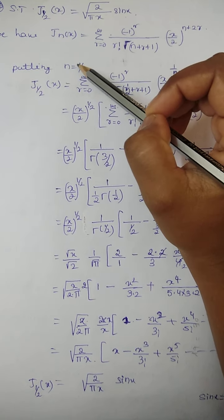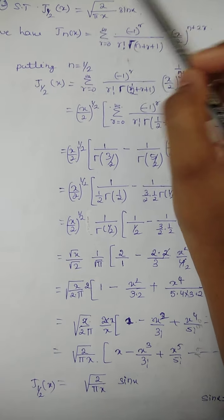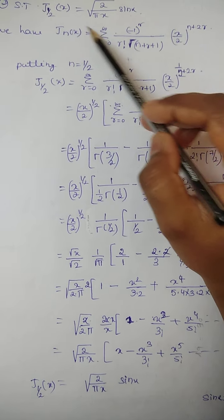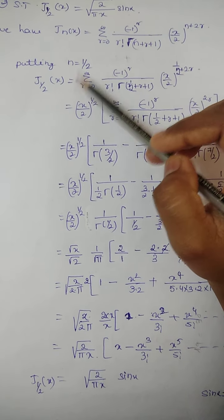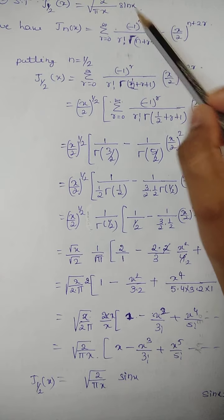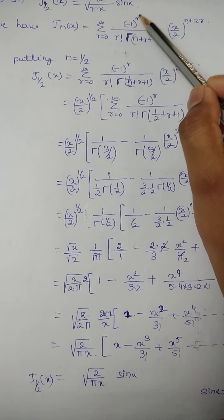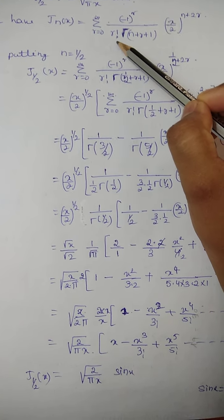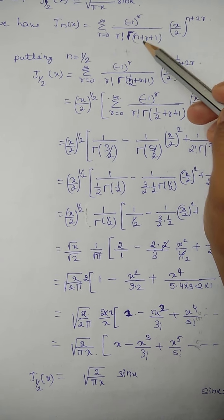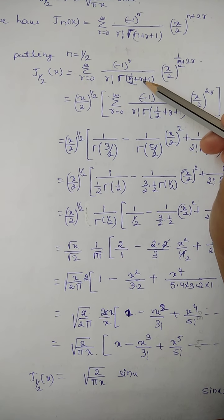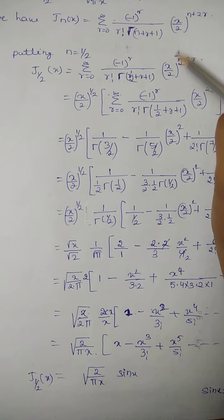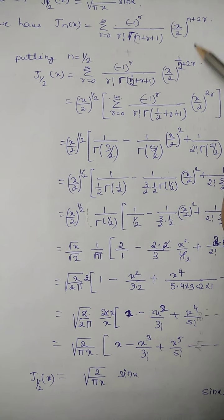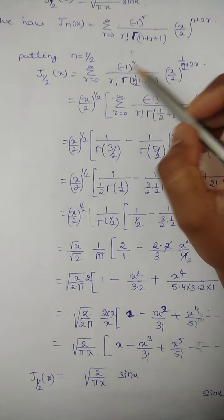Now putting n = 1/2 in this equation, J_{1/2}(x) = summation from 0 to infinity of (-1)^r divided by r! · Γ(1/2 + r + 1), multiplied by (x/2)^(1/2 + 2r).